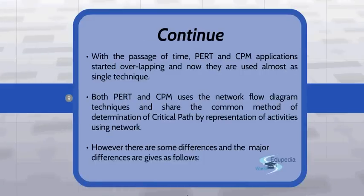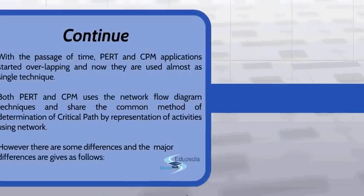With the passage of time, PERT and CPM applications started overlapping and now they are used almost as a single technique. Both PERT and CPM use the same network flow diagram technique and share the common method of determination of the critical path by representation of activities using a network, wherein we use the forward and backward pass methods. However, there are some differences, which are given below.